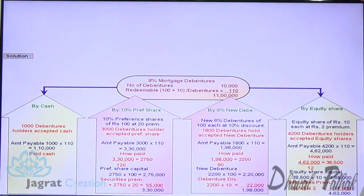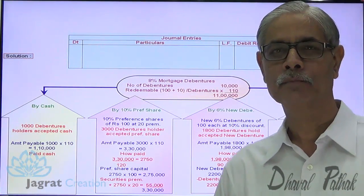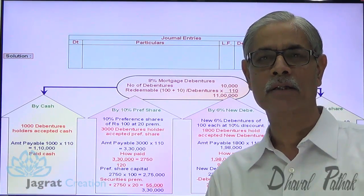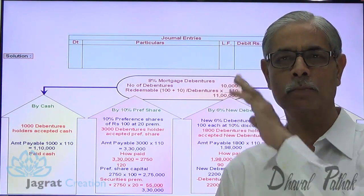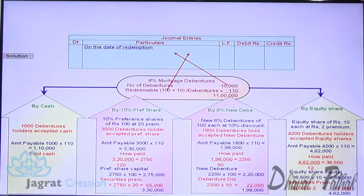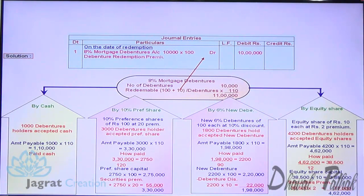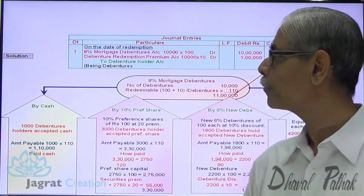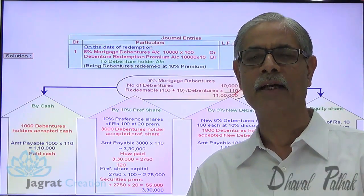First redemption entry: 8% mortgage debentures account debit; debenture redemption premium account debit; to debenture holders account credit, 11,00,000. This is the amount to be paid to debenture holders, being debentures resolved to be redeemed at 10% redemption premium.